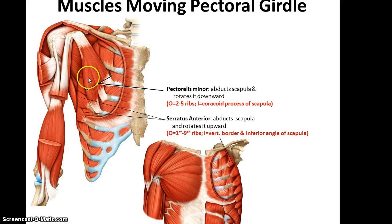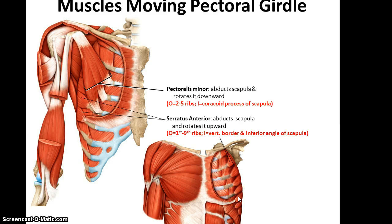And then we have the serratus anterior, which runs along the lateral side of the thoracic cavity. It abducts the scapula and rotates it upward. Its origin is ribs one through nine, and its insertion is the vertebral border and inferior angle of the scapula.